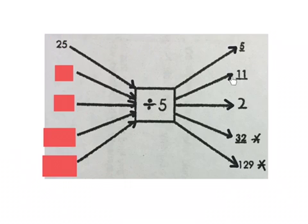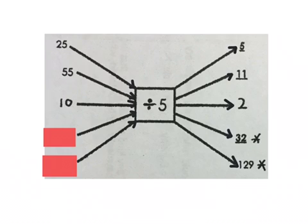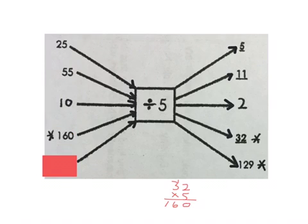Then I say 11, do the opposite, I times 5, gives me 55, because 55 divided by 5 gave me 11. Now I say 2, do the opposite, times 5, gives me 10. Then if I have more complicated numbers like these, I might have to do an extra little calculation. But the rule is still 32, do the opposite, times 5, equals 160.